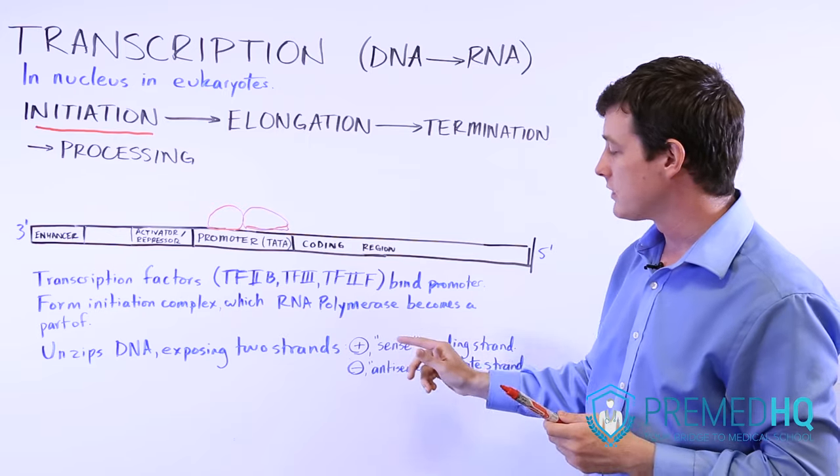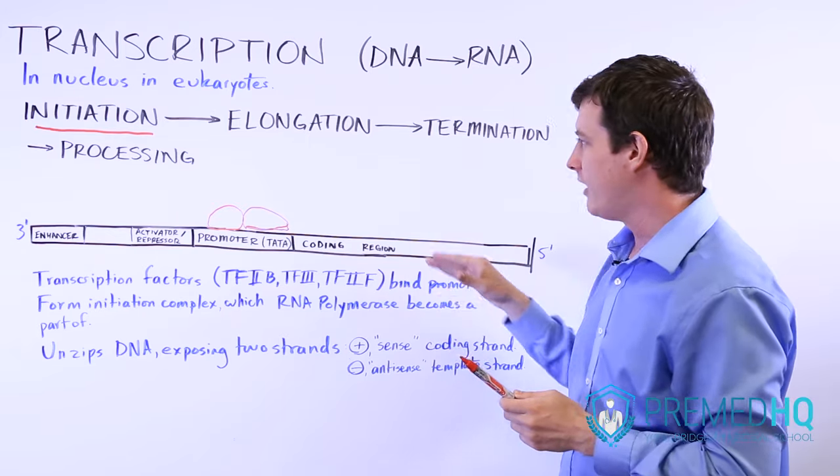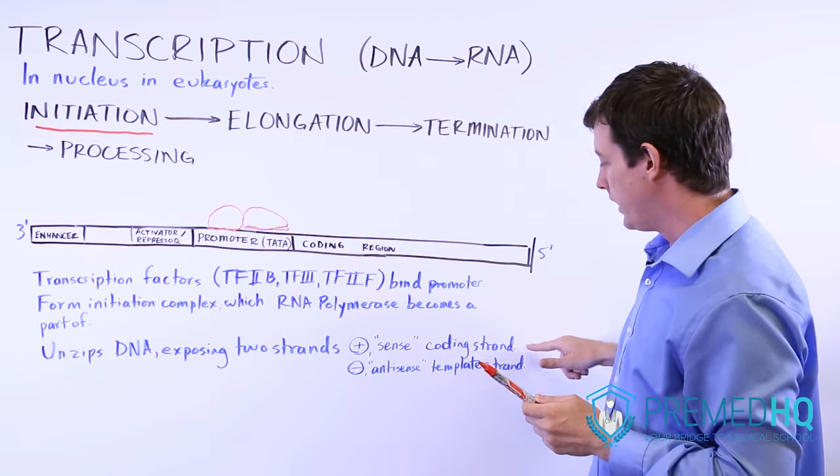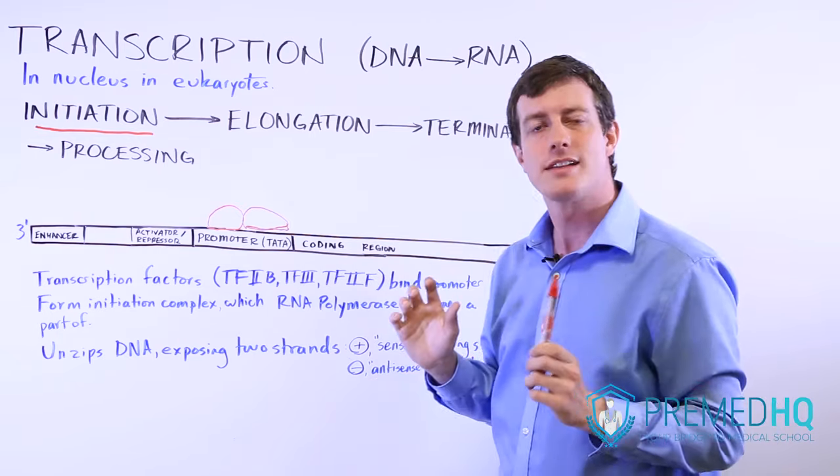But once we get to elongation, we'll discuss the meaning of those strands. There are two of them. There's a plus strand, also known as sense or the coding strand, because the transcript will resemble its code. And then there's the minus strand, which is antisense, and that is actually the template.